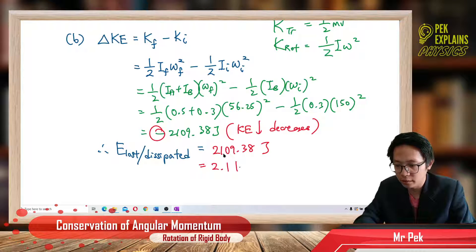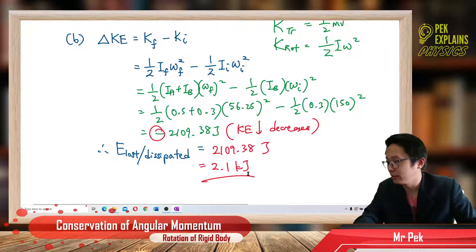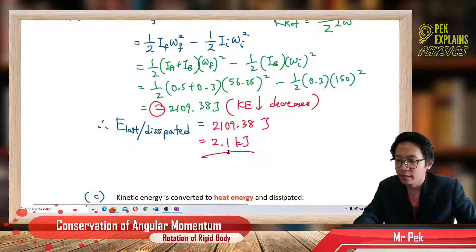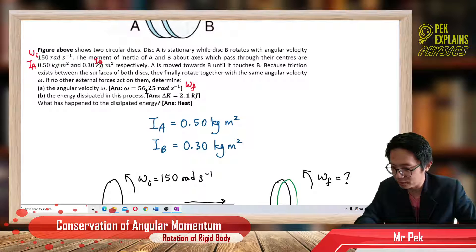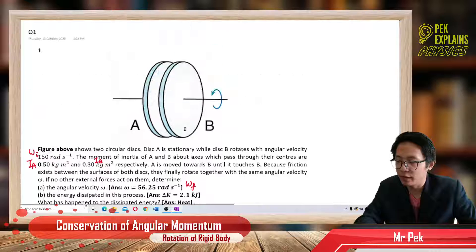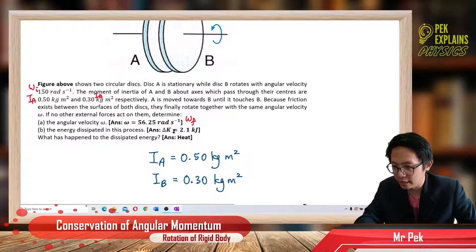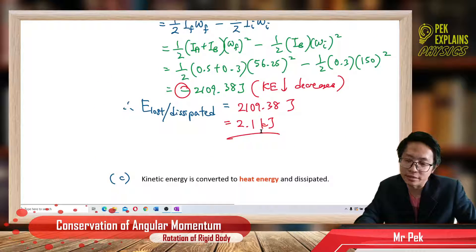The amount of energy lost is 2.1 kilojoules — since 2109.38 joules is approximately 2.1 times 10 to the 3, which is 2.1 kilojoules. So my omega final was 56.25 radians per second, and my kinetic energy loss is 2.1 kilojoules.